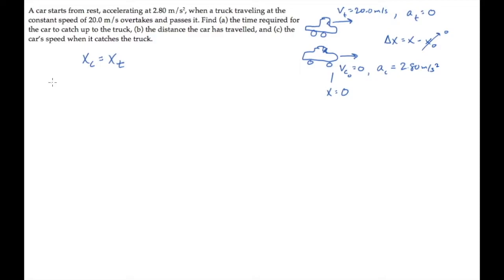We can now write a kinematic equation for each vehicle. For the car, we have position of the car equals the initial velocity times time, plus half at squared. The initial velocity is 0.